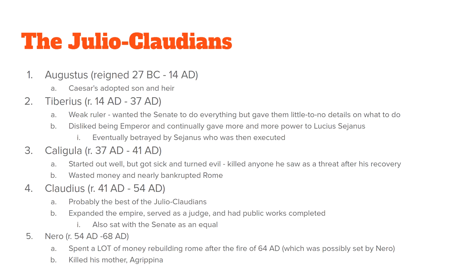Nero is probably the worst of all of them. In 64 AD Rome caught on fire. Nero didn't really do much to stop it because he wanted to rebuild the city in his own image. And by the way, he also killed his mother while he was at it.